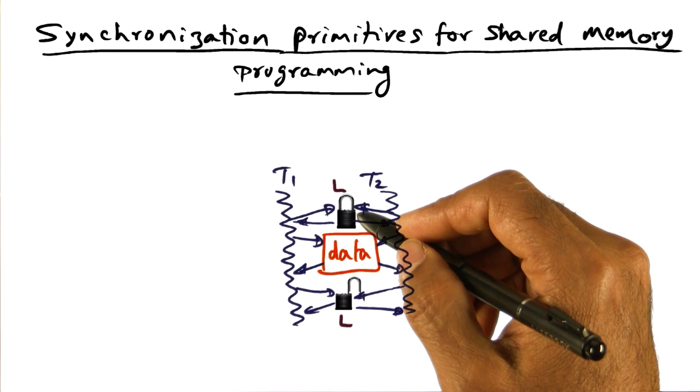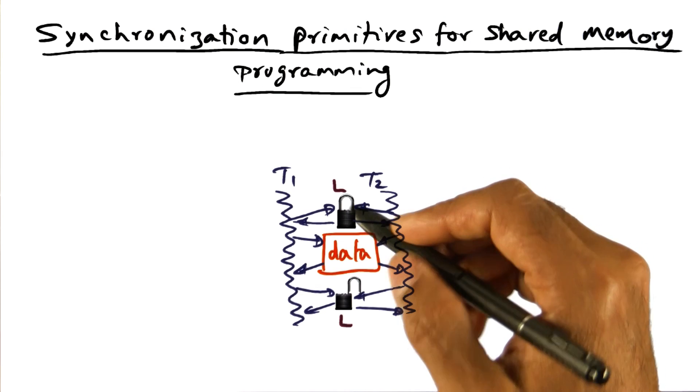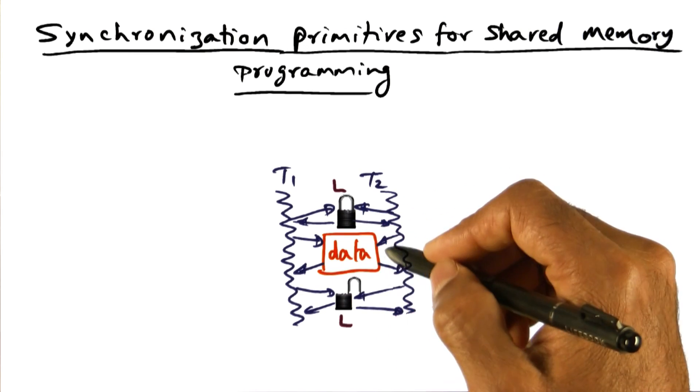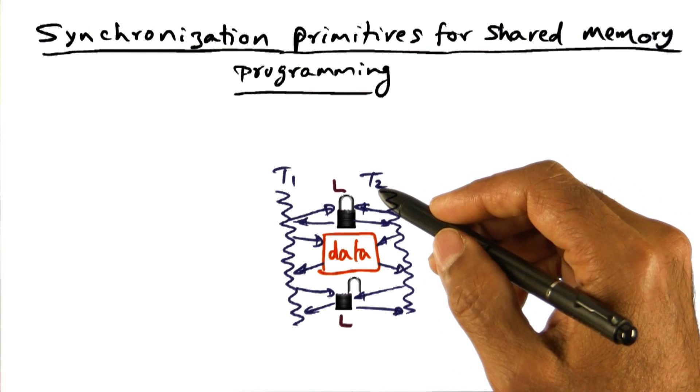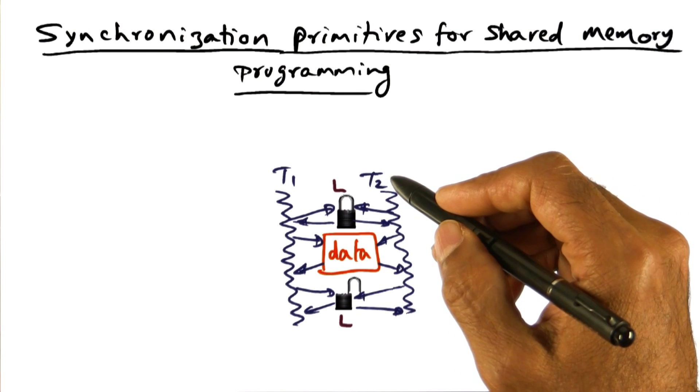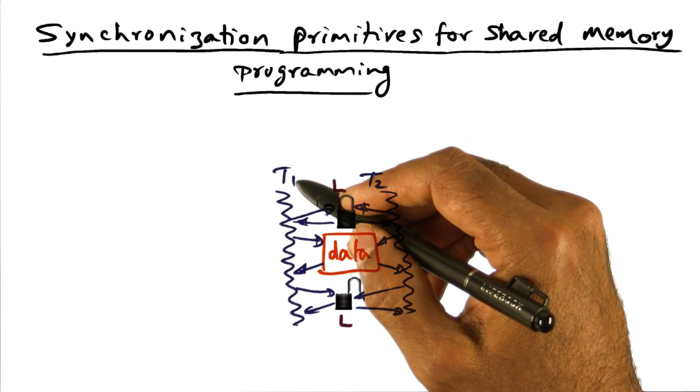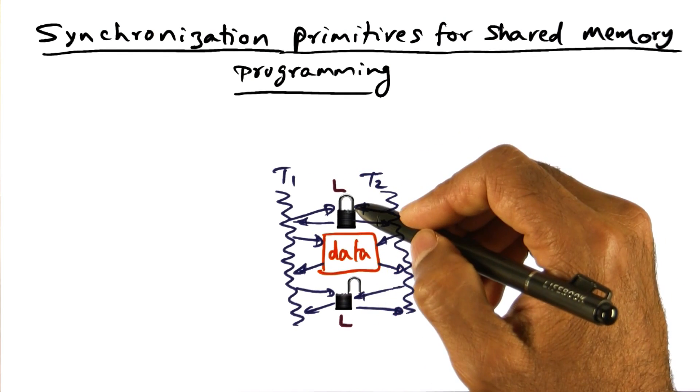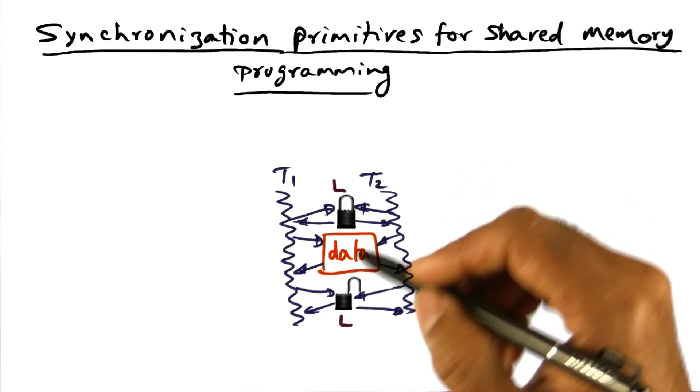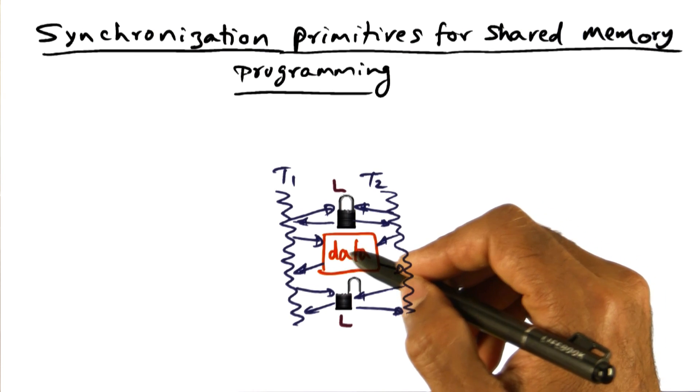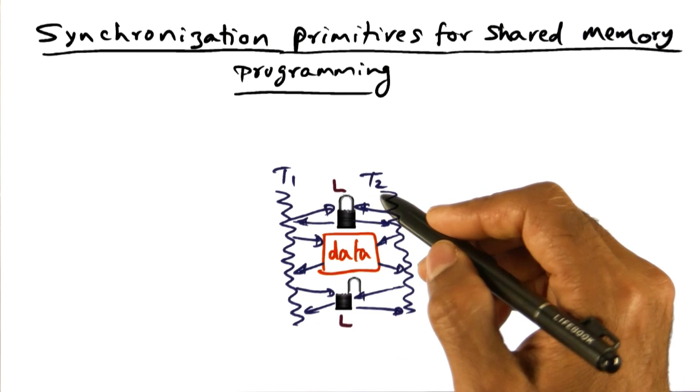And a lock is something that allows a thread to make sure that when it is accessing some particular piece of shared data, it is not being interfered with by some other thread. That's the purpose of a lock. So the idea would be that a thread would acquire a lock, and once it acquires the lock, it knows that it can access the data that it shares with potentially other threads. I'm showing only two threads here.